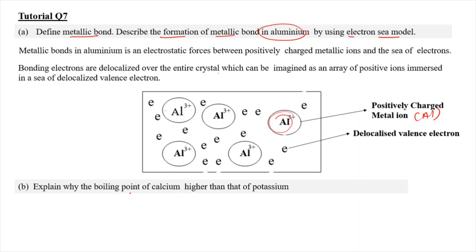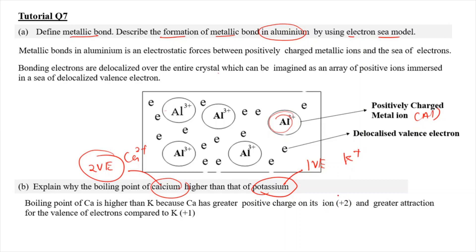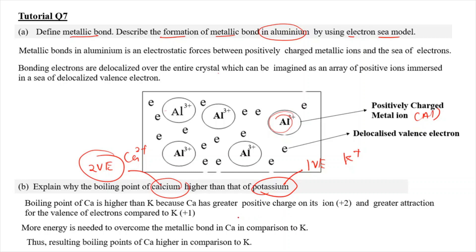For question 7B, we need to explain why the boiling point of calcium is higher than potassium. Calcium has two valence electrons forming Ca²⁺, while potassium has one valence electron forming K⁺. The higher positive charge of Ca²⁺ results in greater attraction for the delocalized valence electrons compared to K⁺. Therefore, more energy is needed to overcome the metallic bond in calcium, and that is why the boiling point of calcium is higher than potassium.